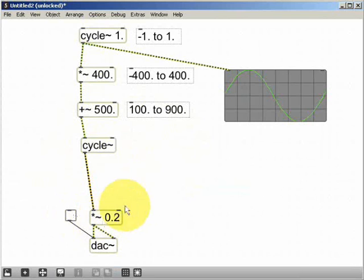So in the example that we just heard, the frequency started at 500 Hertz. It then increased up to 900, back down to 500, down to 100, and back up to 500 again.